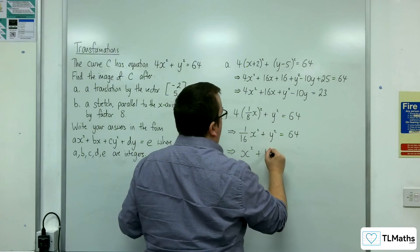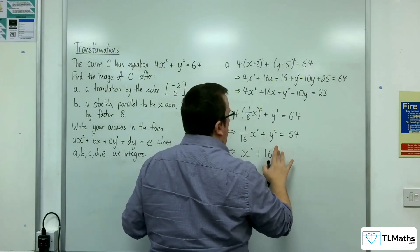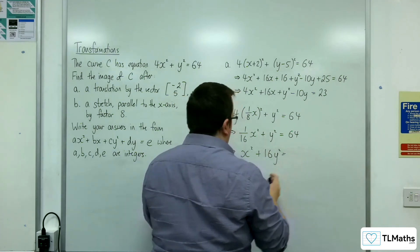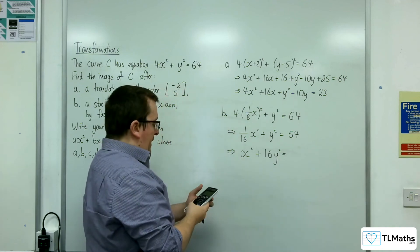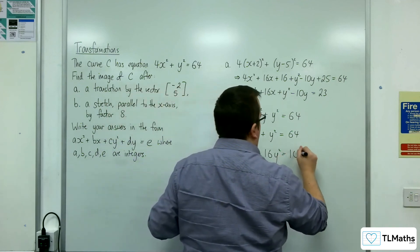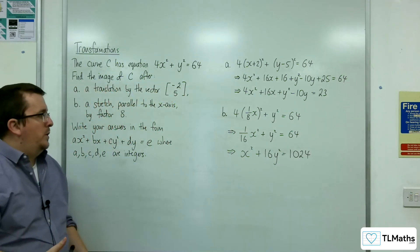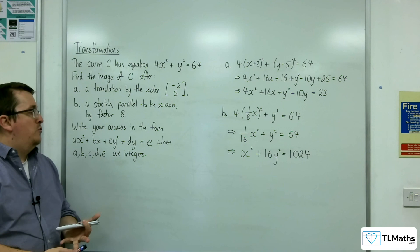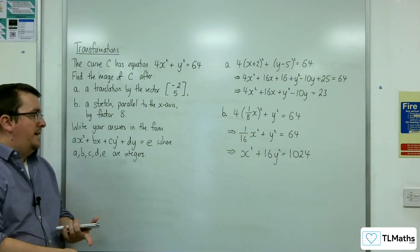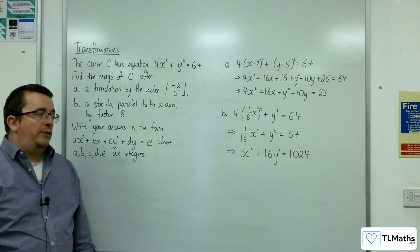So we get x squared plus 16y squared, and then 64 times 16 is 1024. And so it is in the form that we want, where the a is 1, the b is 0, c is 16, d is 0, and the e is 1024.